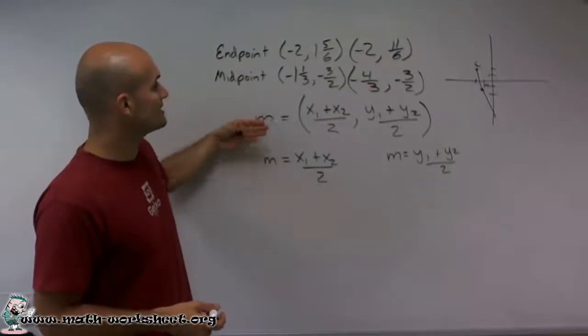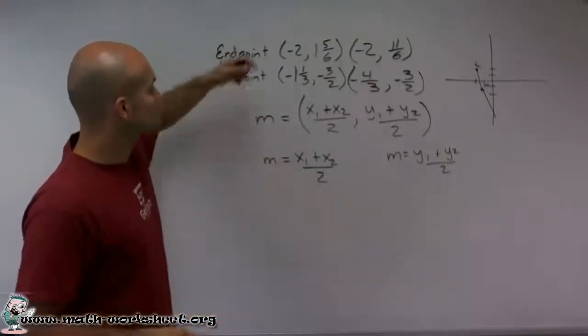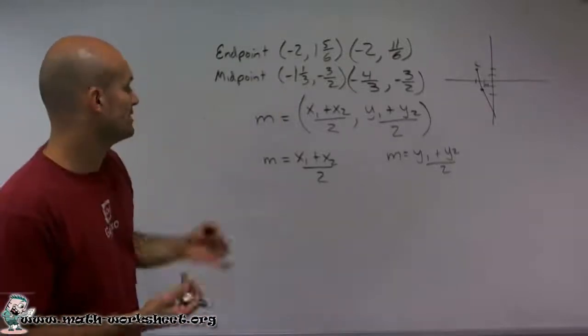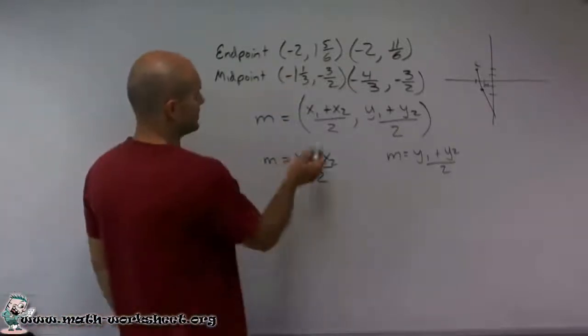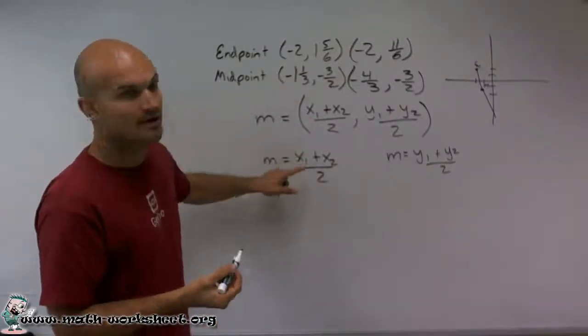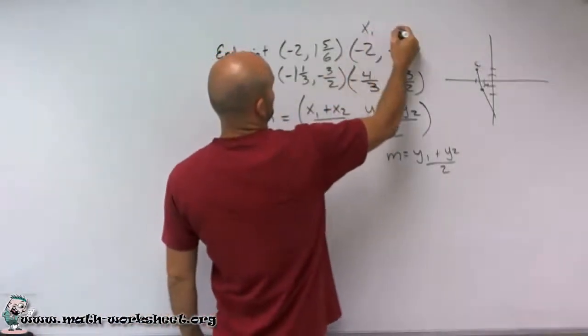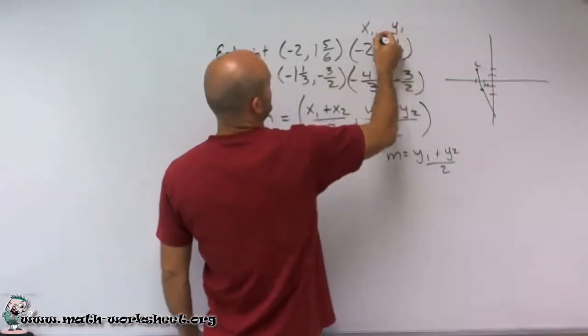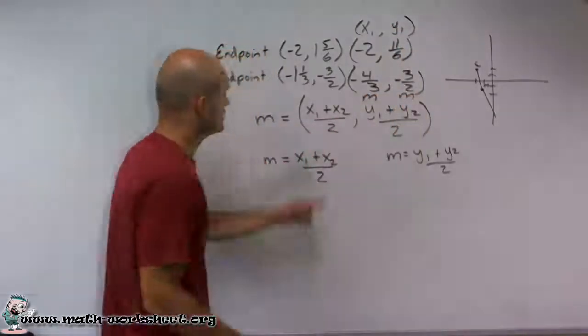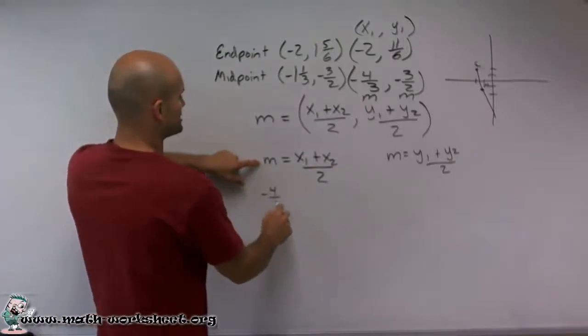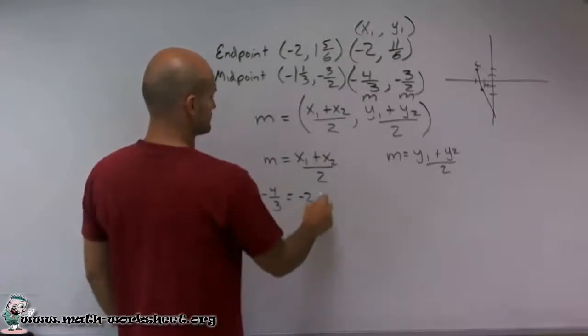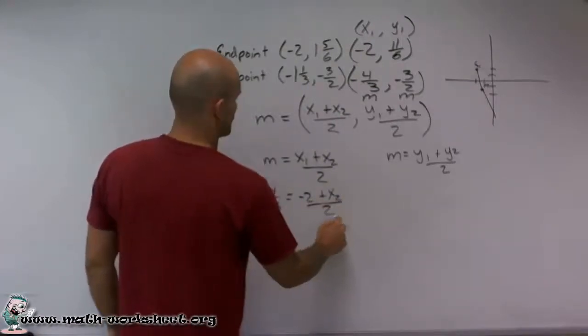So now we need to plug in what is it we do know. So let's figure out what is going to be our midpoint, which is going to be m. So let's do the x-coordinates. And it doesn't matter if you label these as x1 or x2, let's label the endpoint as x1 and y1. So the midpoint is going to be your m. So the x values, I have a negative 4/3 equals a negative 2 plus x2 over 2.